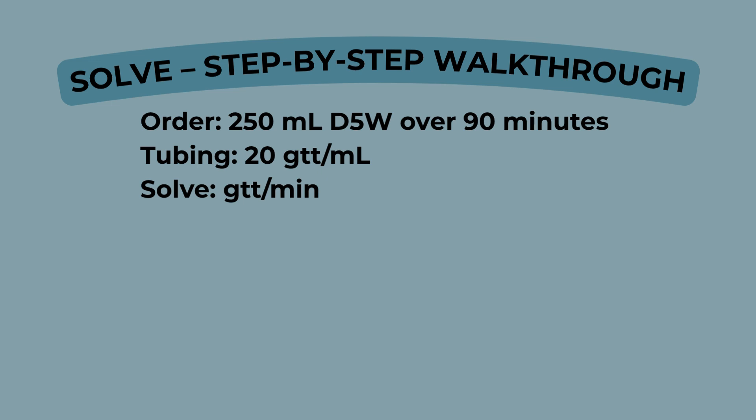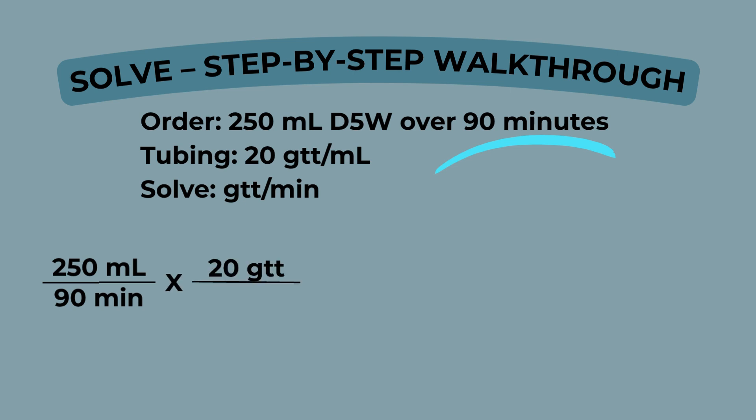Let's walk through the full setup, starting with the time. The order says to infuse 250 milliliters over 90 minutes, so we're already working in minutes — no conversion needed this time. Start with what you're being asked to give: 250 milliliters over 90 minutes. Then add your drop factor: 20 drops per one milliliter. Set it up so the milliliters cancel, leaving you with drops per minute, the unit we're solving for.